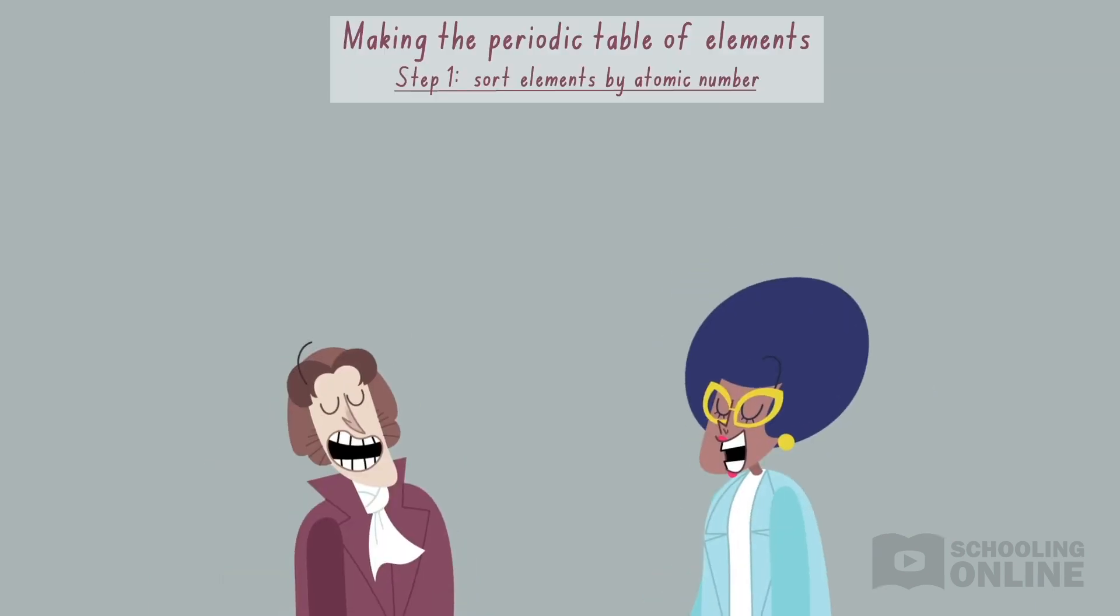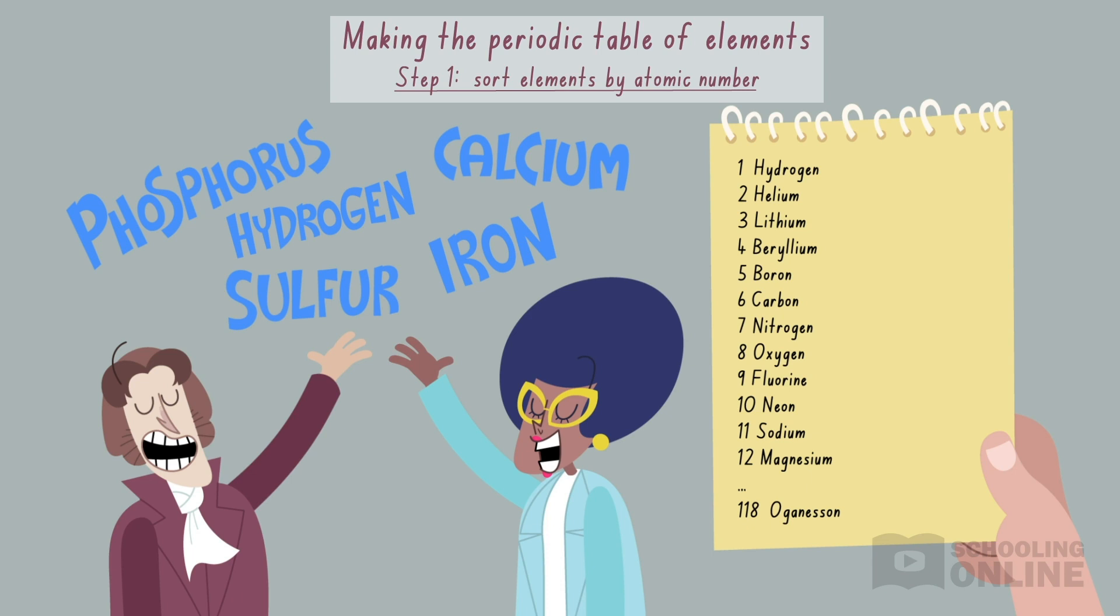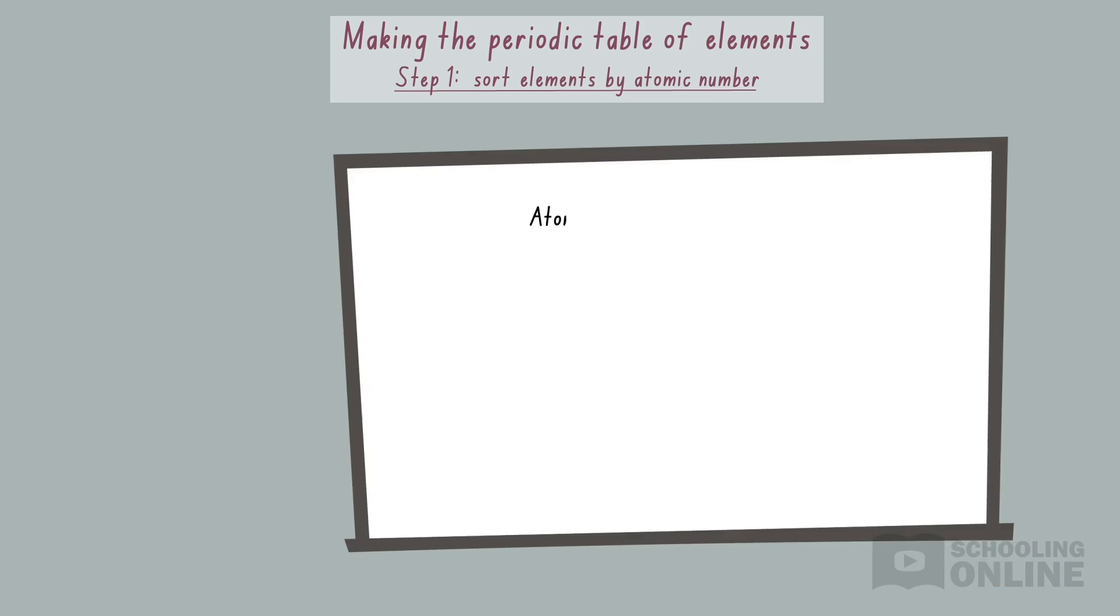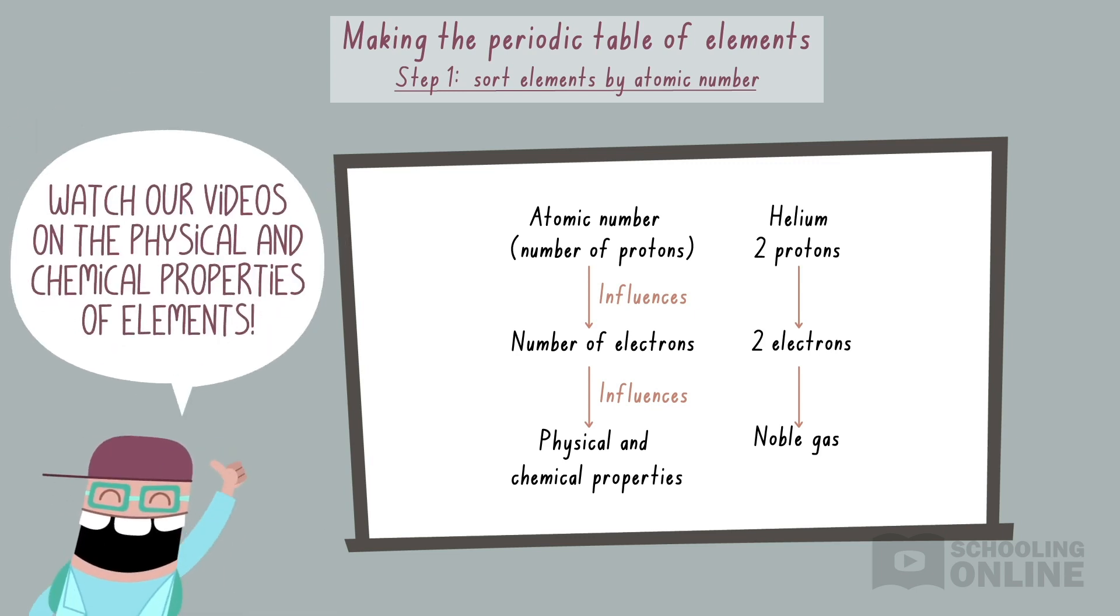To date, scientists have discovered 118 elements. To keep track of everything, we organise the elements by increasing atomic number. But why is the atomic number so important? Well, the number of protons determines the number of electrons orbiting the nucleus, which influences the element's physical and chemical properties. For example, helium contains two protons, so a neutral helium atom is surrounded by two electrons. This makes helium a noble gas because it has a complete outer shell. We'll discuss this further over the next two lessons.